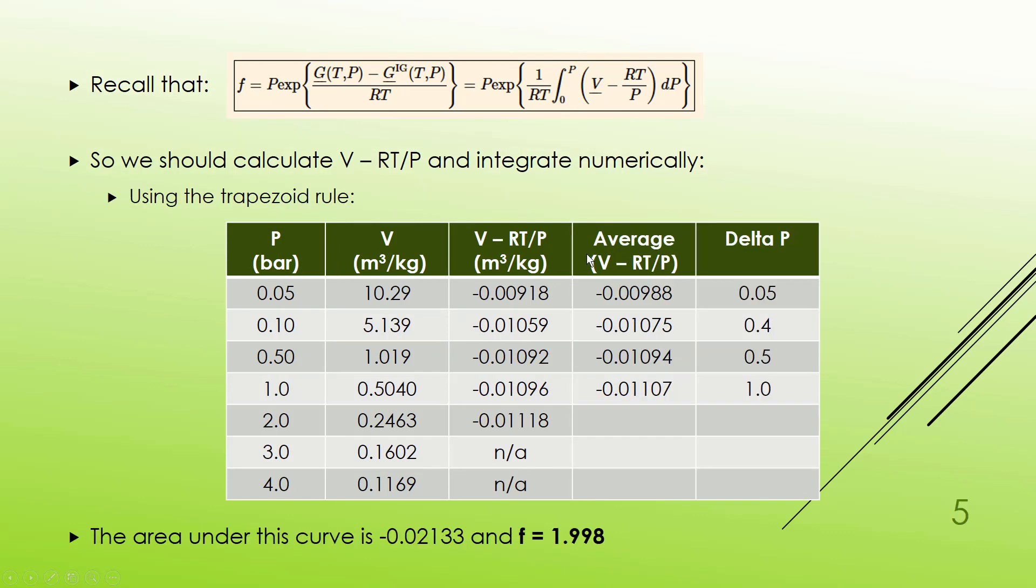In order to do this numerical integration, I ended up using the trapezoid rule. So I used average values and then the delta P, the thickness, the width of each of my sections. So this becomes my average height. These become my width of my trapezoids. Multiply these together, add them up,